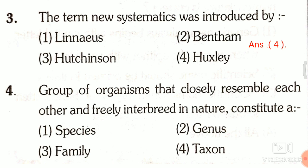Question 4: A group of organisms that closely resemble each other and freely interbreed in nature constitute a — first, species; second, genus; third, family; fourth, taxon. The correct answer is the first one, that is species.